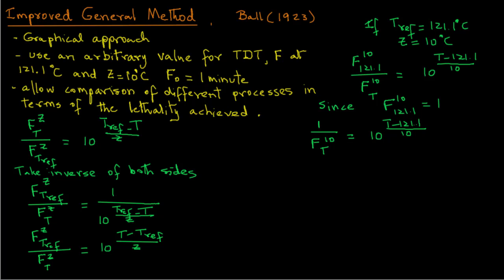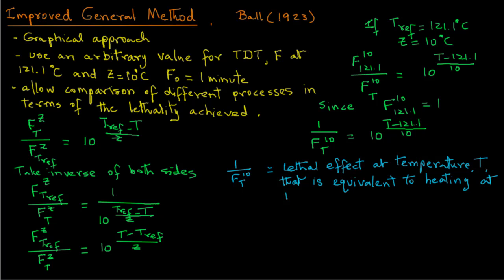The quantity on the left hand side, 1 over F^10_T, we call lethal effect. This is the lethal effect at temperature T that is equivalent to heating at 121.1 degree C for one minute, where the target microorganism Z value is 10 degree C. So we can use another symbol L for the lethal effect and we can say L, the lethal effect, equals 10 raised to power T minus 121.1 divided by 10. In improved general method, we will be determining lethal effect at different temperatures. So this equation is rather important.